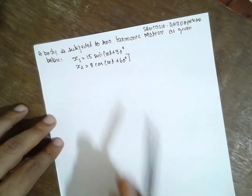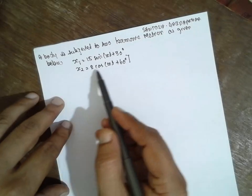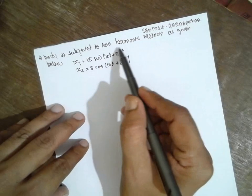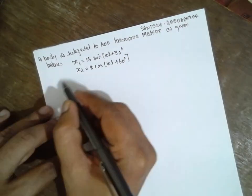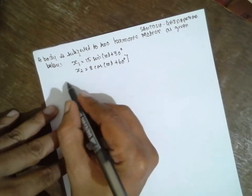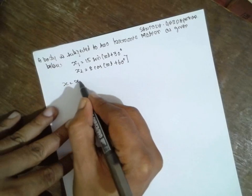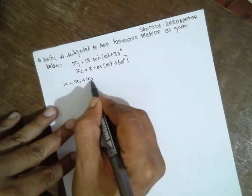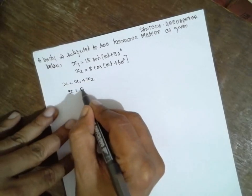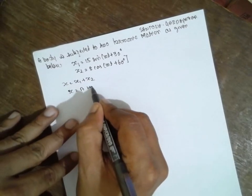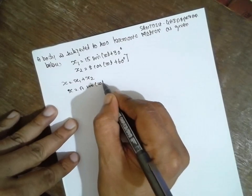I am Santosh Gayathankar. Today's concept is about the two harmonic motion as given below. From the derivation we know that x is nothing but x1 plus x2. x is nothing but A sin(ωt + φ).